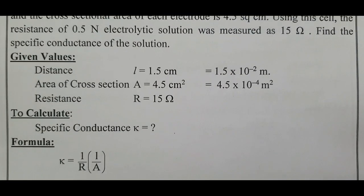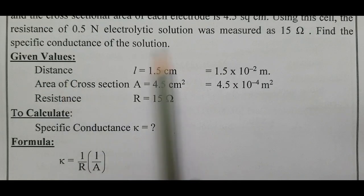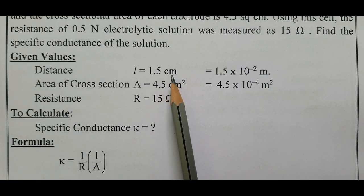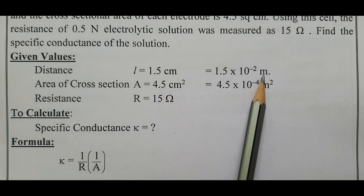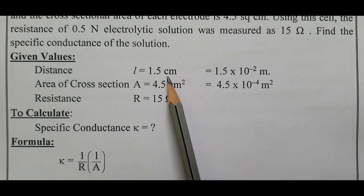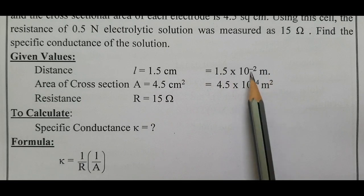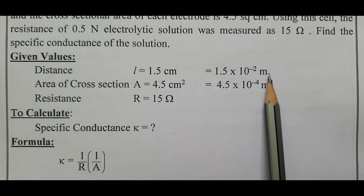What are the given values? Distance is given as 1.5 centimeter. Now, we have to convert that centimeter into meter. 1 centimeter is equal to 10 power minus 2 meter.